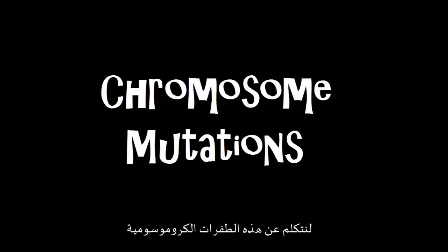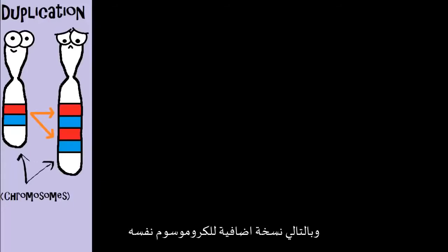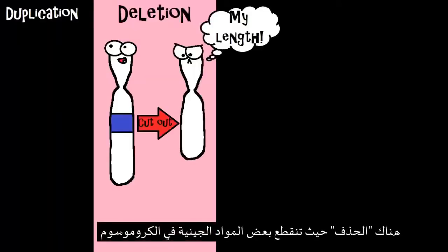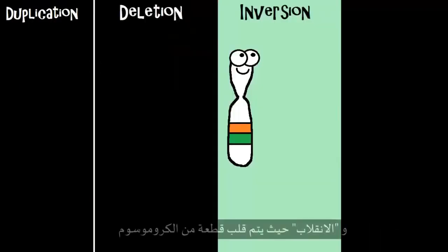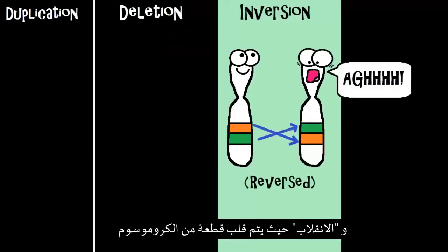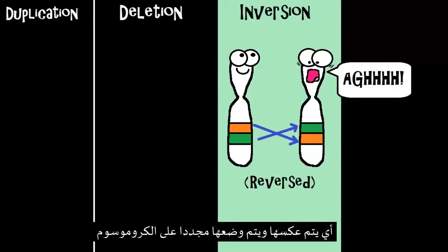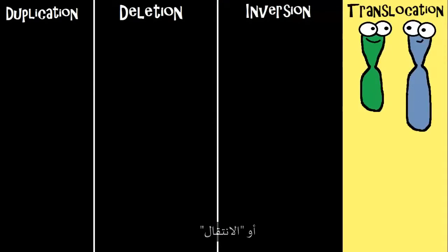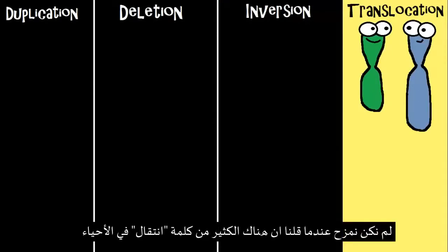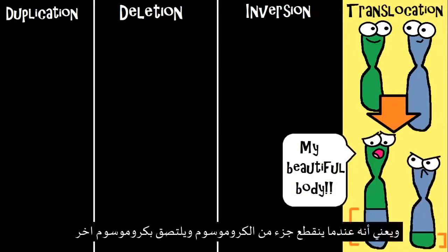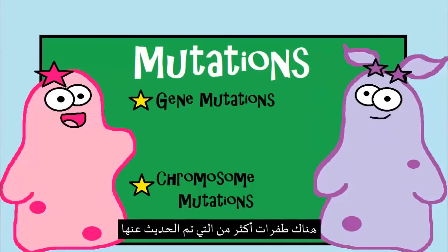Just like insertion in gene mutations, you can have duplication in chromosomes, where extra copies of genes or chromosome segments are generated. There's also deletion, where some genetic material breaks off the chromosome; inversion, where a broken chromosome segment gets reversed and put back on; and translocation, where a fragment from one chromosome breaks off and attaches to a different chromosome.